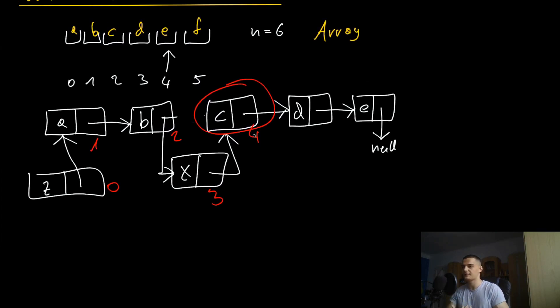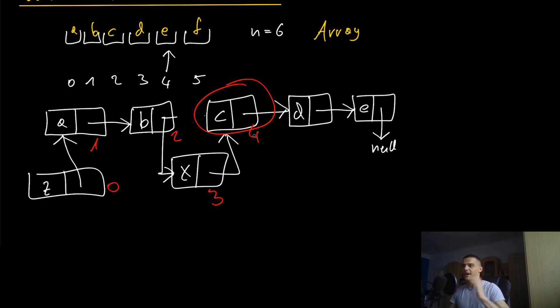The focus here is not on linked lists or arrays specifically — it's on understanding why we need different data structures. It's not enough to just use the same data structure for everything. For example, if you want an efficient search, you'd want a binary search tree. Different data structures serve different purposes.